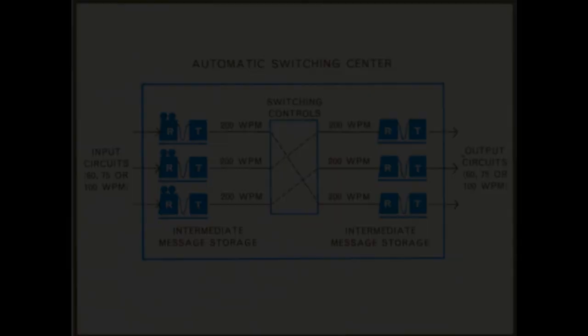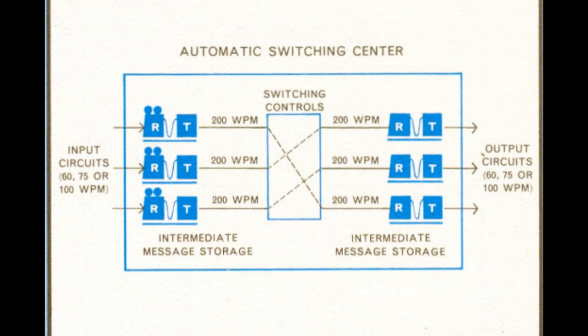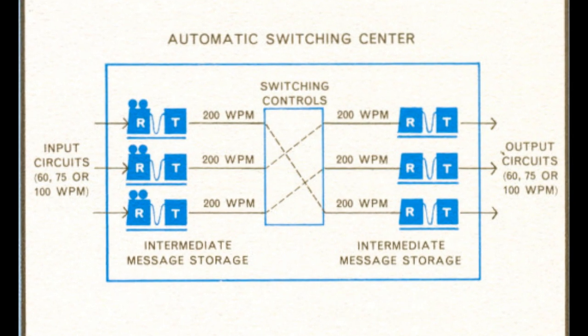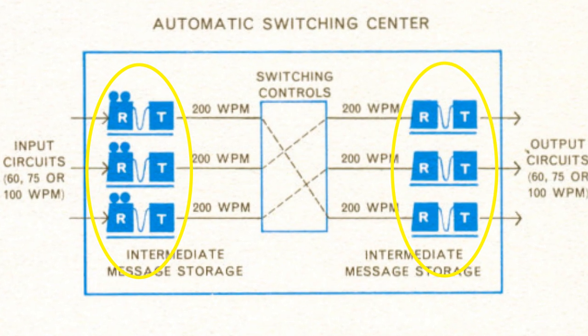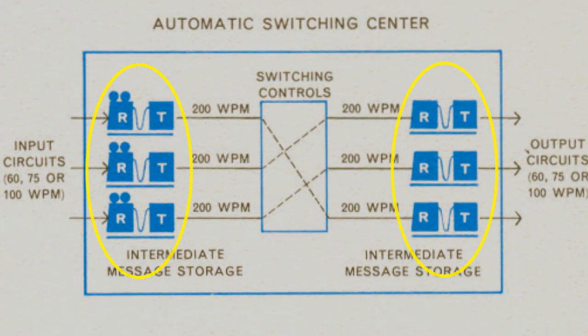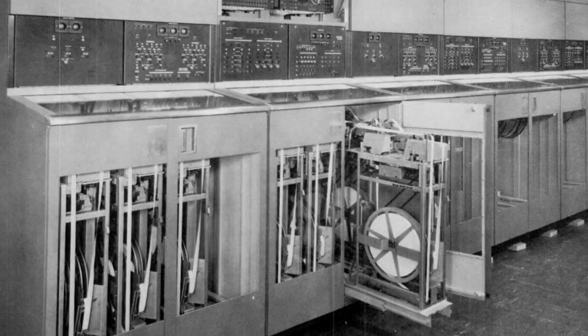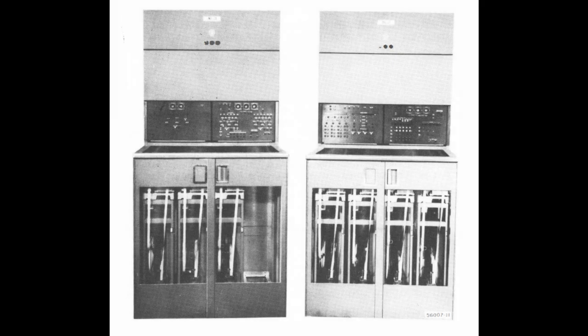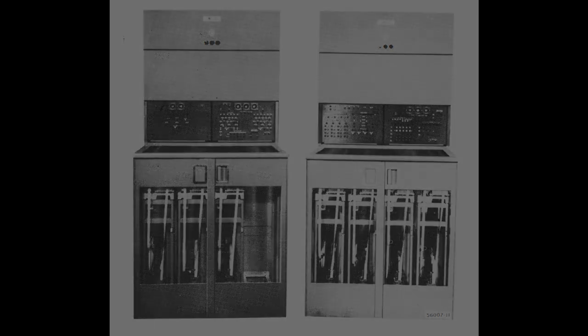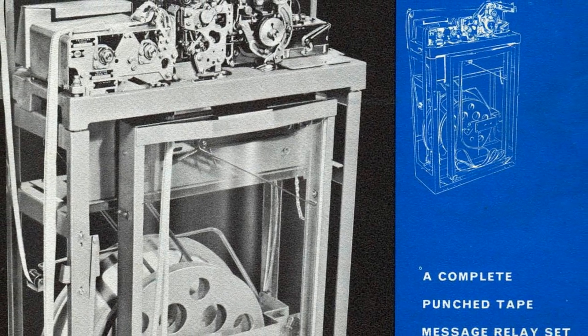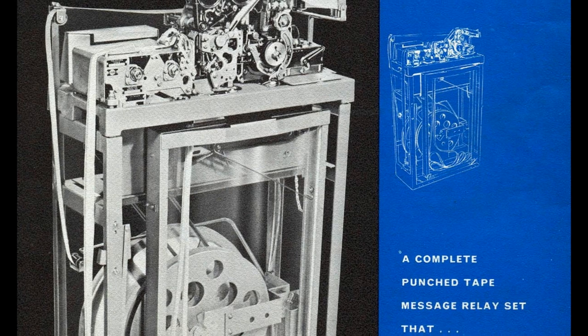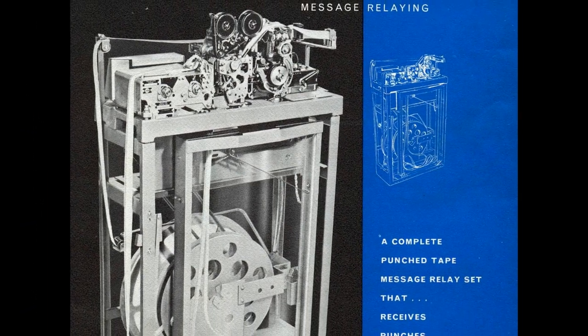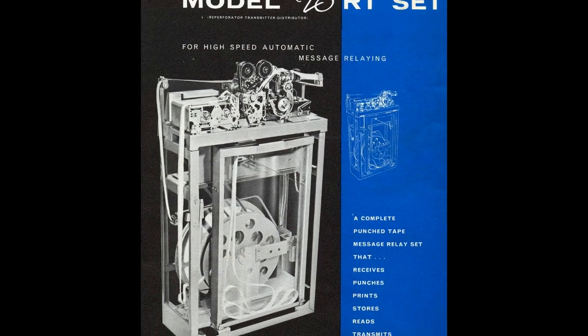The 82B-1 was a modular system with only two kinds of modules required to build up a teletypewriter switching center: incoming cabinets and outgoing cabinets. These contained all the flexibility of features needed to adapt them to any application. A switching center with as many as 100 incoming lines and as many as 220 outlet destinations could be built up by adding the appropriate number of each cabinet type. Each incoming cabinet has two typing re-perforator transmitters, one for each input. These re-perforating transmitters were made by the Teletype Corporation, which at the time was owned by Western Electric, AT&T's manufacturing arm.